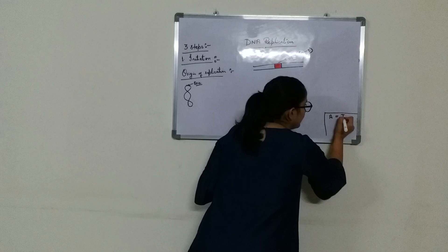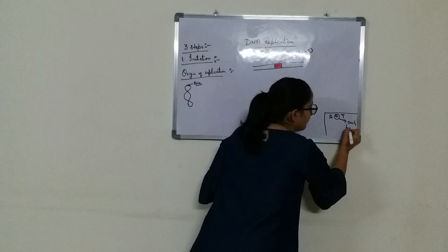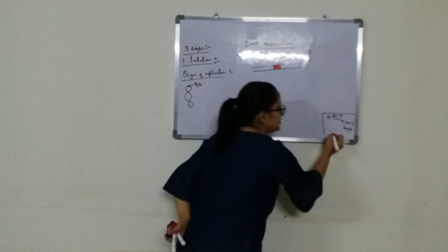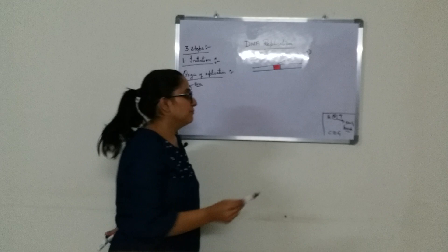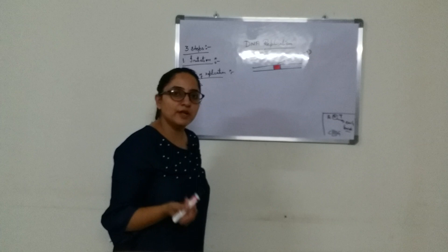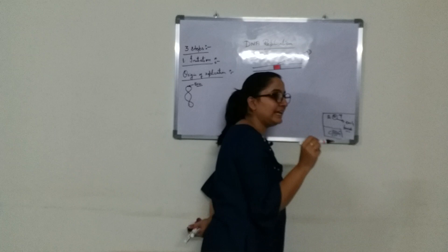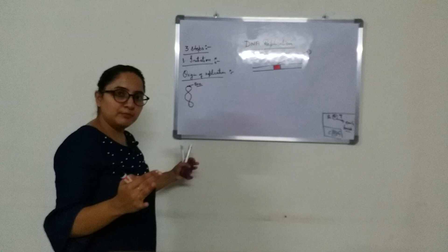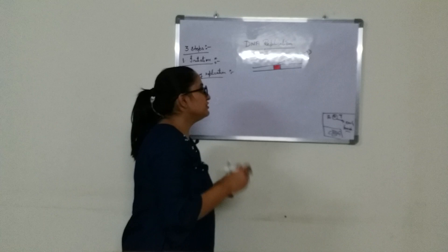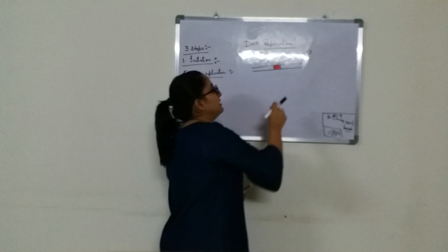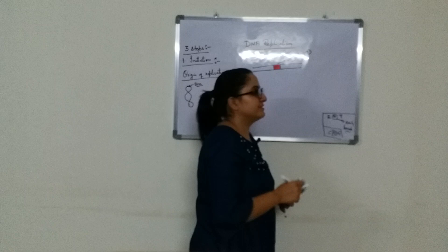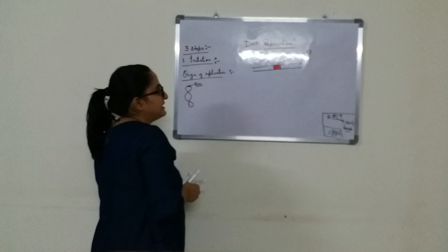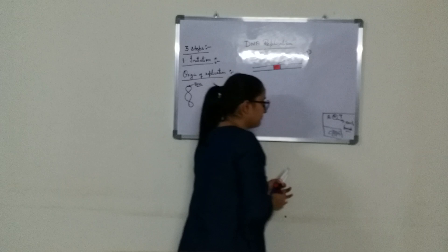The oriC is AT-rich because A-T is a double bond and is easily breakable, while C-G is a triple bond and is difficult to break — it requires more energy. So where adenine and thymine are present, that site is easily breakable, which allows us to separate both strands. We need to find the AT-rich location in oriC to separate the bonds.